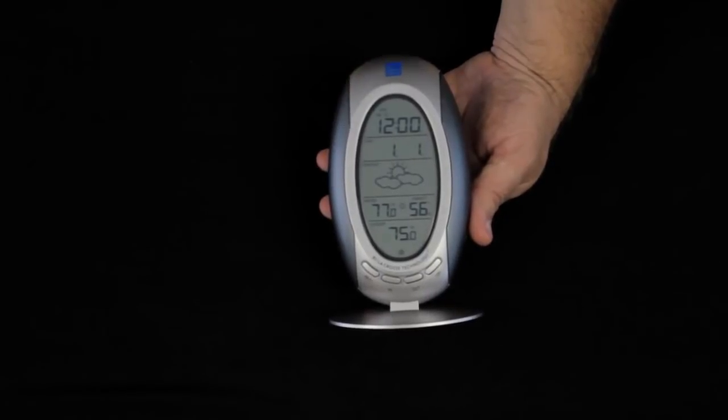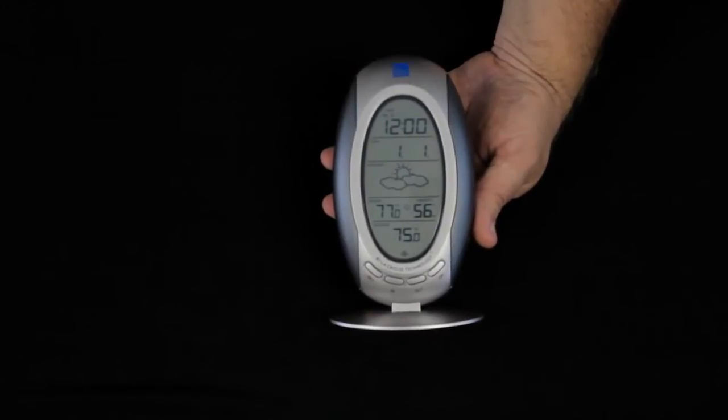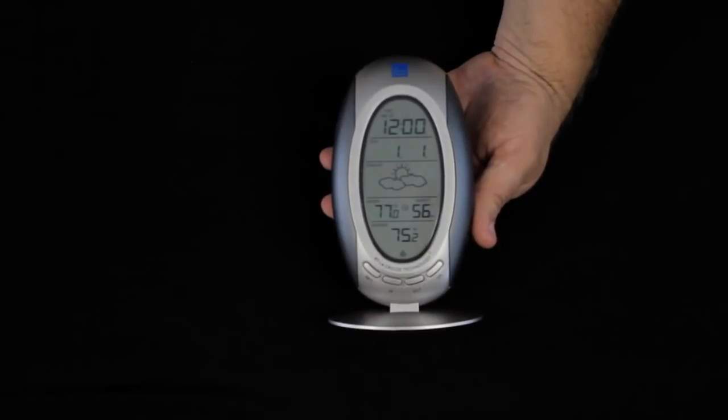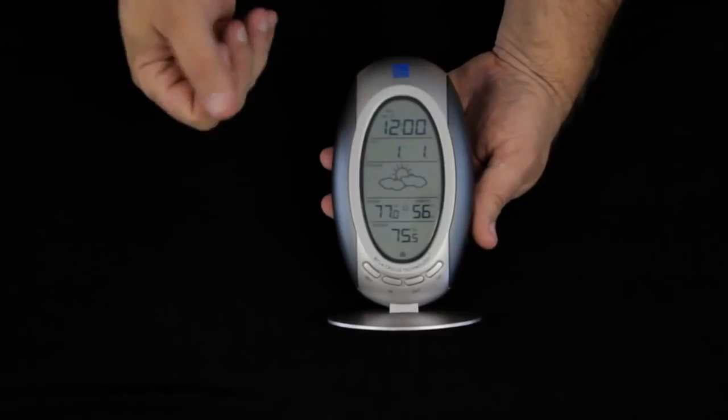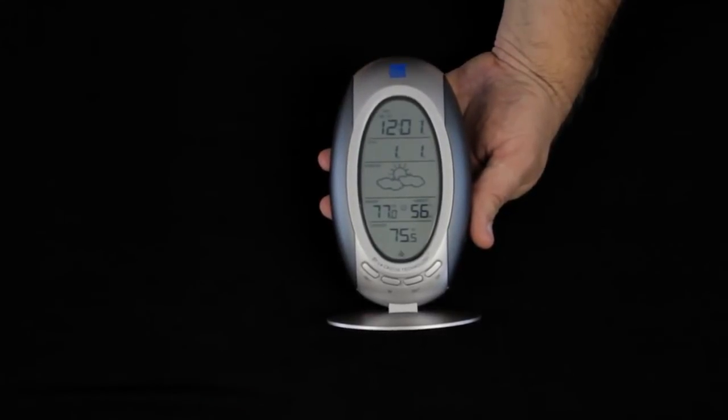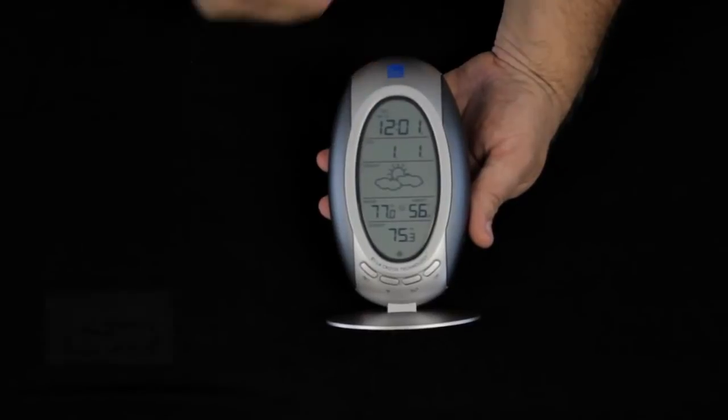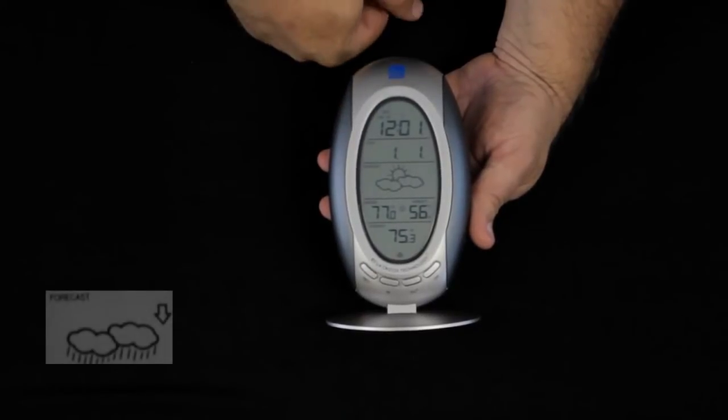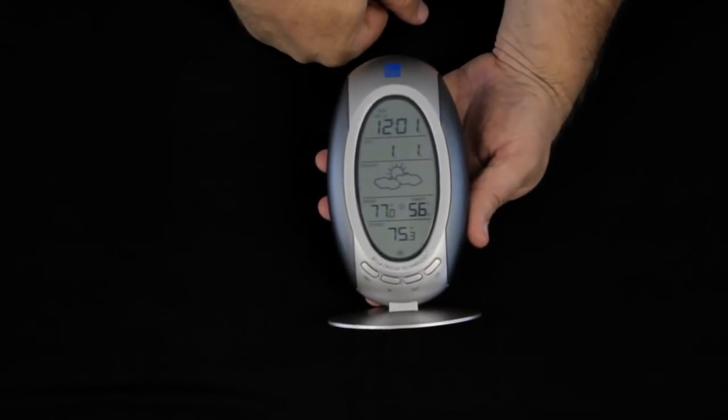The unit has a three icon forecast. After it's been operational for three days or so, it will start to give you a fairly accurate forecast. The three icons: this icon is just showing partly cloudy. The second icon is just the sunshine, showing that you're expecting clear skies. And the third icon is just the rain cloud or clouds with rain underneath, showing that we're expecting deteriorating weather conditions that might go to rain.